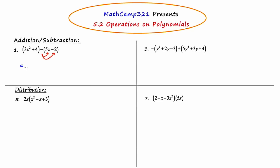So we're going to rewrite this as 3x squared plus 4 minus 5x plus 2. Now I'm going to look for like terms. The 4 and the 2 are like terms and can be combined, but everything else is one of a kind. So my final answer will be 3x squared minus 5x plus 6.